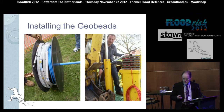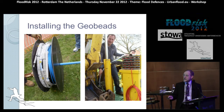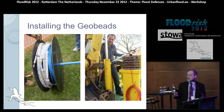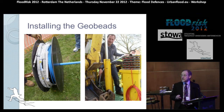This is the installation of the geo-beads. You can see one of the geo-beads here, and you can also see that the cable between the individual geo-beads is wrapped in Hessian. Behind the Hessian are bentonite shells, which expand and isolate the individual instruments from one another, so you know you're measuring the pore pressure at the exact location you want.